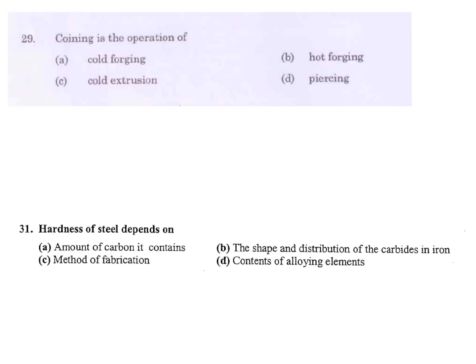Coining is the operation of a) Cold forging, b) Hot forging, c) Cold extrusion, d) Piercing. It is cold forging. Sometimes list 1, list 2, matching, it will come like this. Here a, b, c, d, 1, 2, 3, 4. Here I will get cold forging for coining.